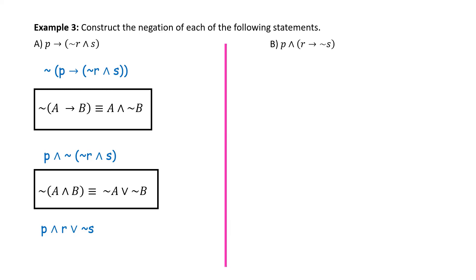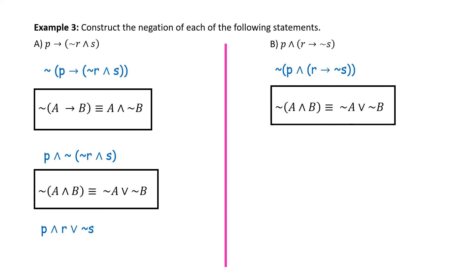Part B: P and, in parentheses, R implies not S. We want to negate that, putting the negation symbol in front of the whole expression. We use DeMorgan's Laws: not (A and B) equals not A or not B. Applying that gives us not P or not (R implies not S).